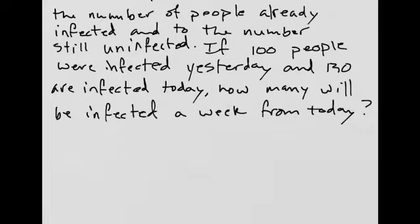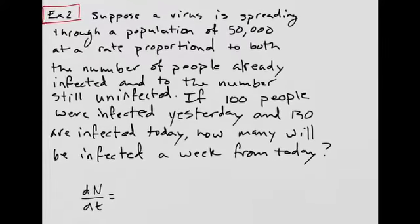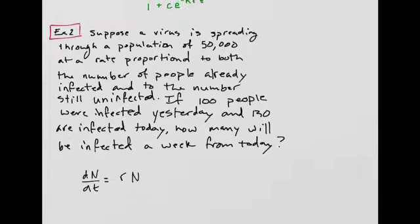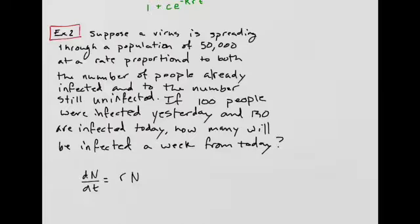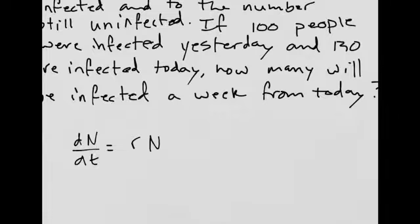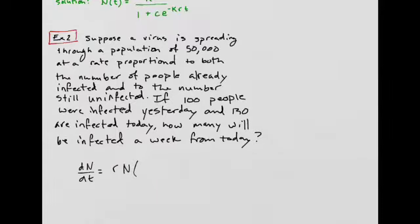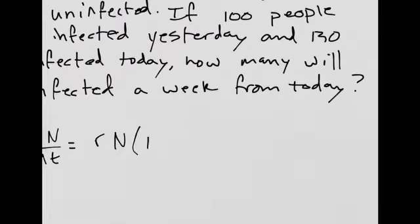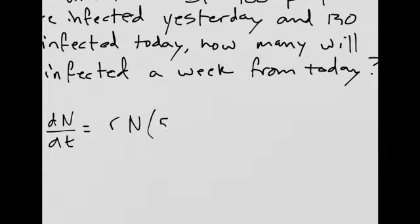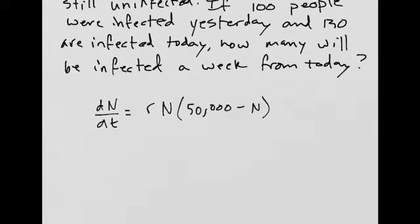So the differential equation dN/dt, that's the rate at which the infection spreads. That's going to be r, some rate proportional to the population of infected people. n is the number of infected people. This is the rate of change of infected people. And then the limiting factor, you can't infect more than 50,000 people because that's the maximum number of people. So this would be 50,000 minus n. So k is 50,000. That is our differential equation.